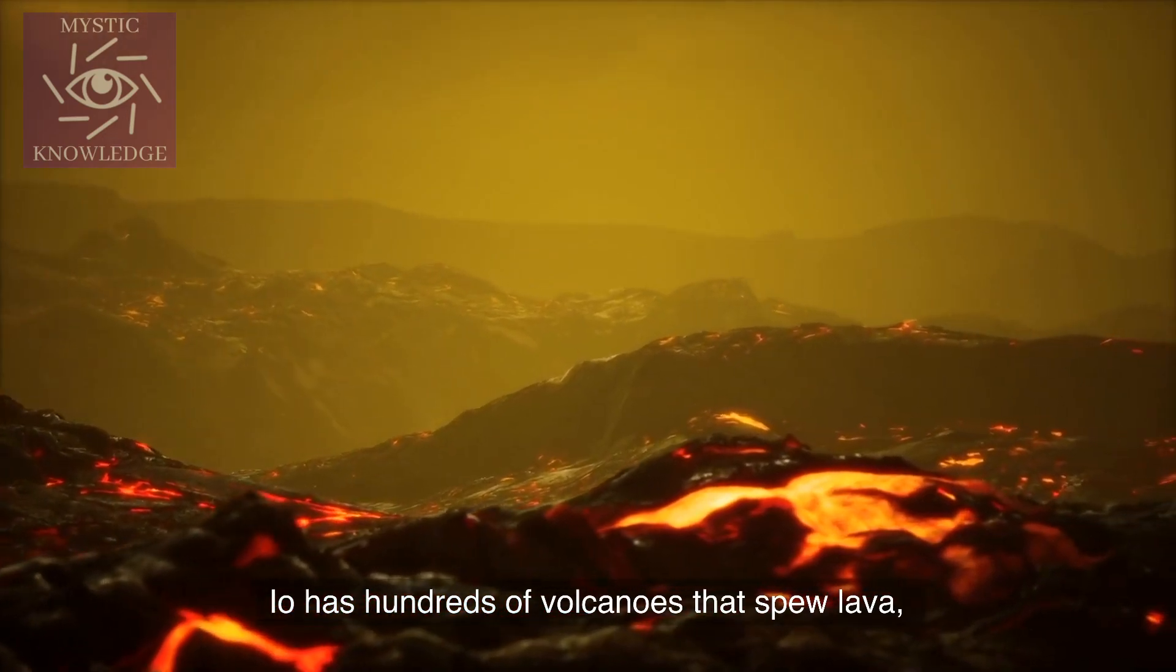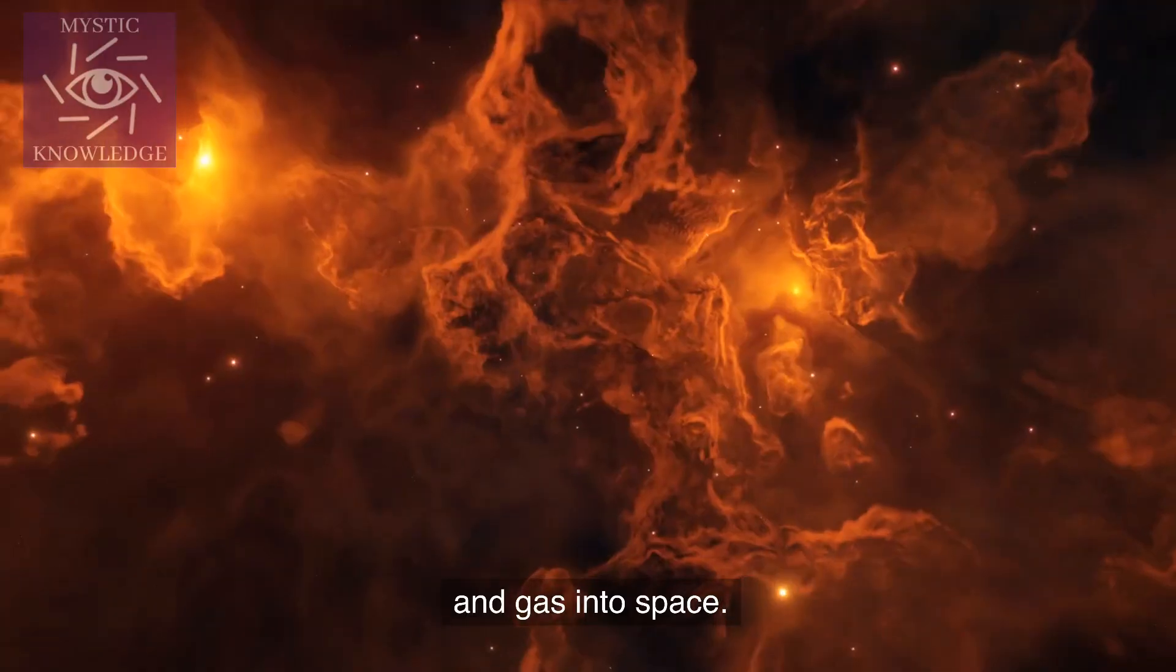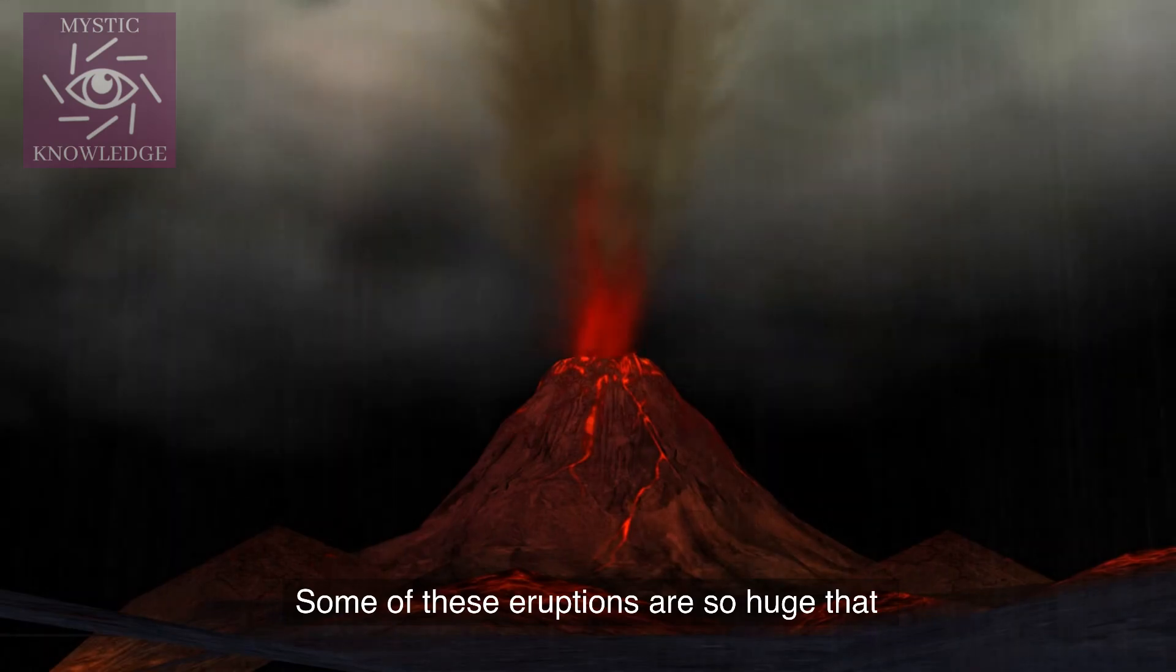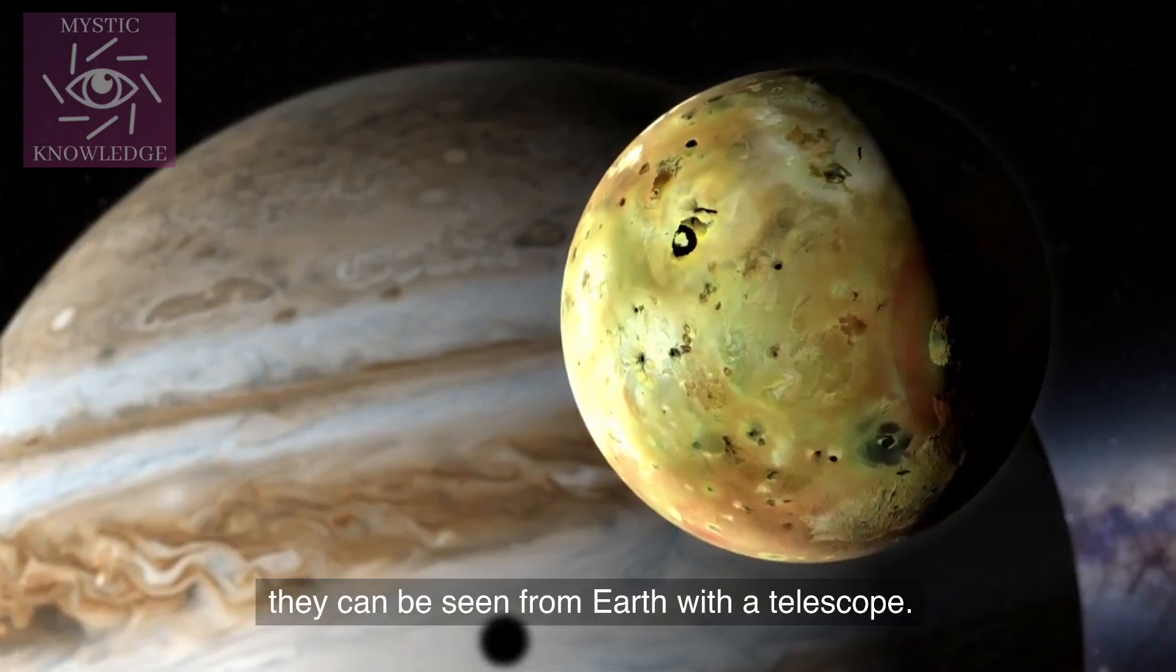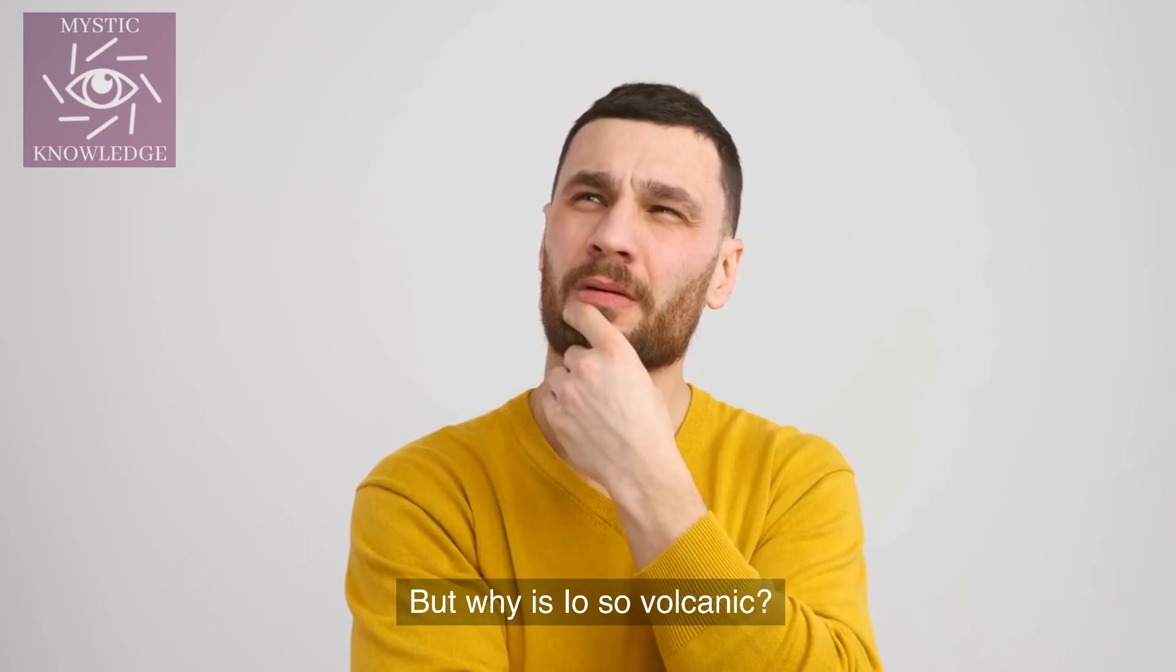Io has hundreds of volcanoes that spew lava, sulfur, and gas into space. Some of these eruptions are so huge that they can be seen from Earth with a telescope. But why is Io so volcanic?